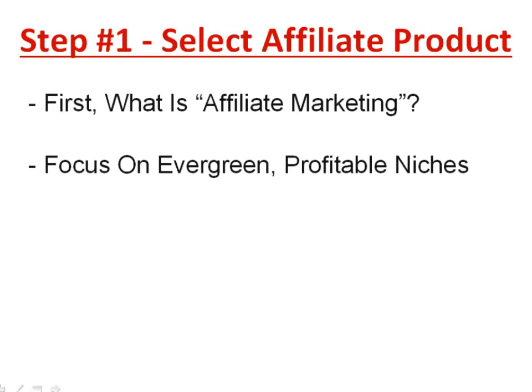The secret to making good money with affiliate marketing is to focus on evergreen, profitable niches. This principle stays true especially if you want long-term affiliate marketing income. There are thousands of niches out there, and while you could pick any one, you want to choose something evergreen — meaning it is timeless. Regardless of when, people are always going to need the product or a solution to their problem.